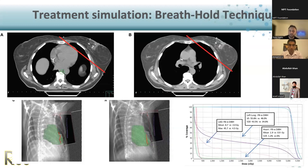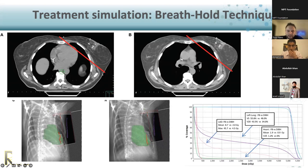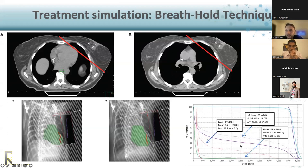Ben also mentioned deep inspiration breath hold. On the left here is a free breathing scan, and on the right is an example of when a patient takes a breath hold — the air they inhale in their lungs will help separate the heart from the breast tissue we're treating. In these DRRs — digitally reconstructed radiographs — we can see that in free breathing the heart, contoured in green, can come very close to the field. When a breath hold is taken, the heart is intended to be pushed away. Many studies have shown you can reduce dose to the heart, the lung, and also the left anterior descending artery.